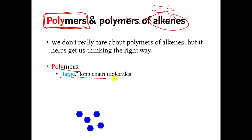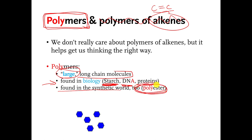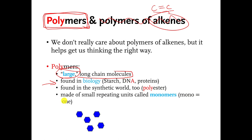Polymers are large long chain molecules. I put 'large' in quotes because compared to us all molecules are relatively small, but they're large compared to most other molecules that we think about most of the time. They are found in biology — starch is a polymer, DNA is a polymer, protein molecules are polymers. They are also found in the synthetic world; polyester is a type of polymer molecule. What polymers are is they are made of small molecules, but the small molecules are connected to each other in a repeating way over and over again.